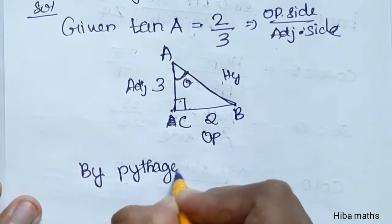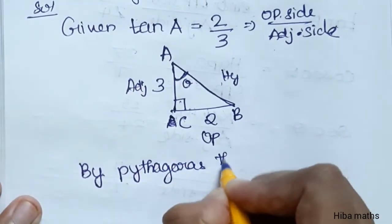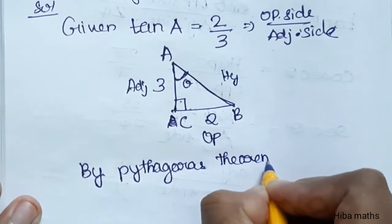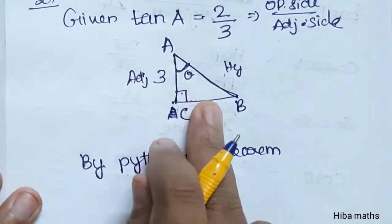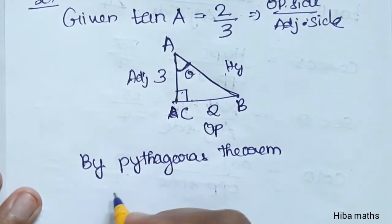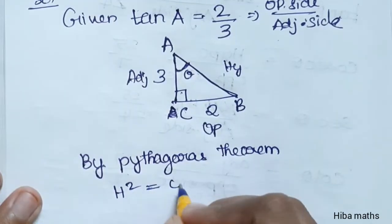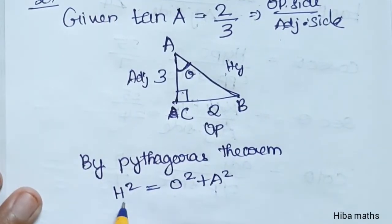By Pythagoras theorem: hypotenuse squared is equal to opposite squared plus adjacent squared.